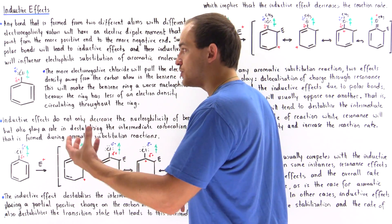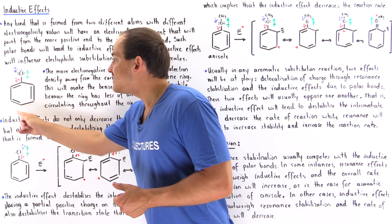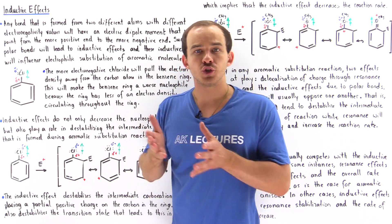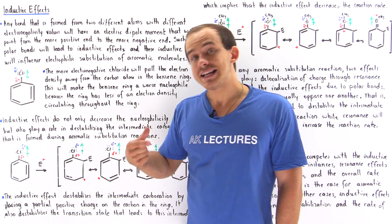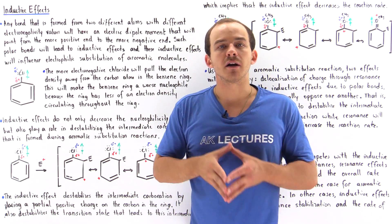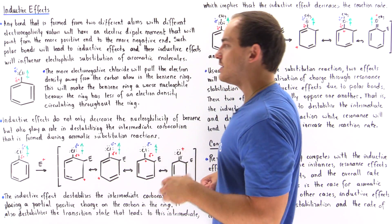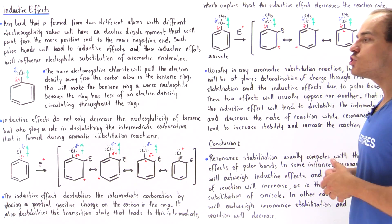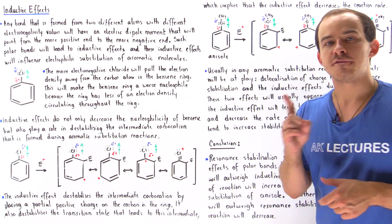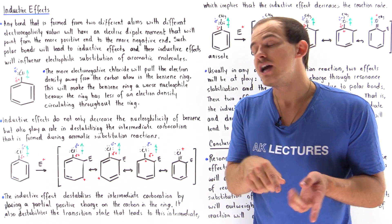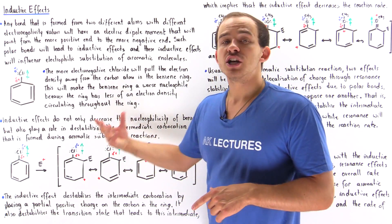This deficiency of electrons on this carbon makes the entire benzene ring electron deficient. Because the benzene ring acts as a nucleophile in any electrophilic substitution reaction, its nucleophilicity — the ability of benzene to act as a nucleophile — will decrease. By definition, a nucleophile is something that can donate a pair of electrons. Because we have fewer electrons in this ring as a result of this inductive effect, the ability of that benzene to undergo a nucleophilic reaction will decrease. Inductive effects also decrease the rate of the reaction and destabilize the intermediate carbocation formed in the first step.